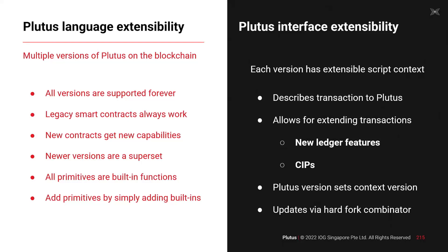There are really two aspects to extensibility. There's Plutus language extensibility — where we put in new built-in functions like the SecP256K1 — which gives us the ability to expand Plutus as a language. And then there's interface extensibility — the interface to the node — where we get to use new ledger features, and this is how the CIPs fit in.